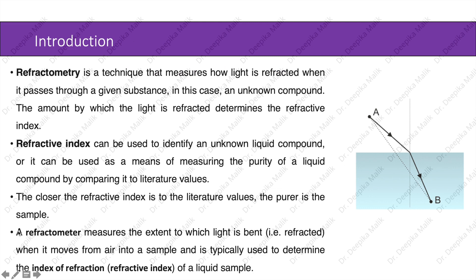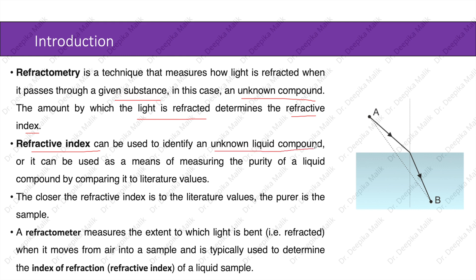Refractometry is a technique that measures how light is refracted when it passes through a given substance, in this case an unknown compound. The amount by which the light is refracted determines the refractive index. Refractive index can be used to identify an unknown liquid compound, or it can be used as a means of measuring the purity of a liquid compound by comparing it to literature values. The closer the refractive index is to the literature values, the purer the sample is.